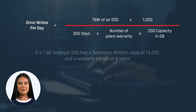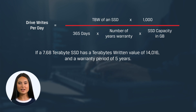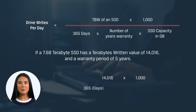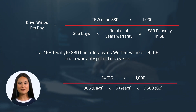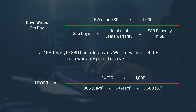For instance, if a 7.68 terabyte SSD has a terabytes written value of 14,016 and a warranty period of 5 years, the DWPD calculation is as follows. We take the TBW value of 14,016 and multiply it by 1,000. Next, we take 365 days multiplied by 5 years, then multiply again by 7,680 gigabytes. Dividing the upper value by the lower value results in one drive write per day, meaning the SSD can handle writing its entire capacity every day over its 5-year warranty period.